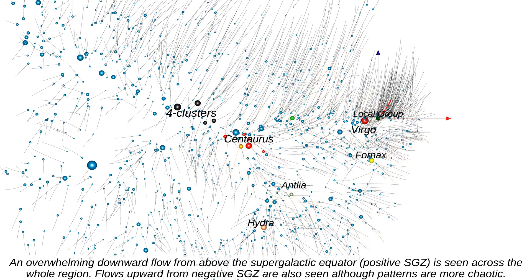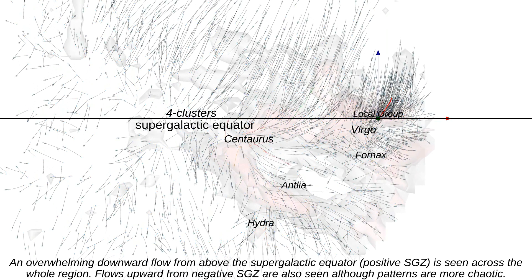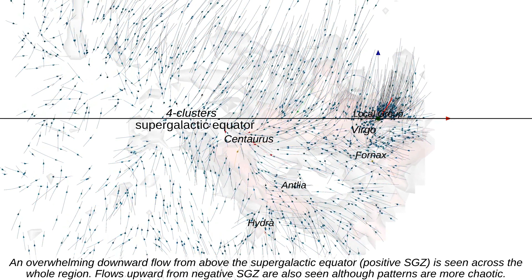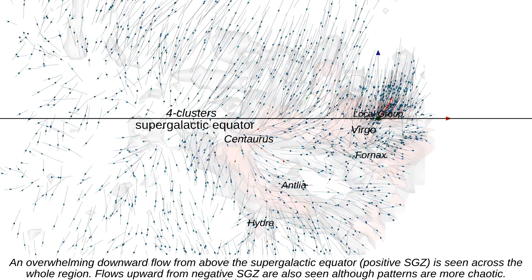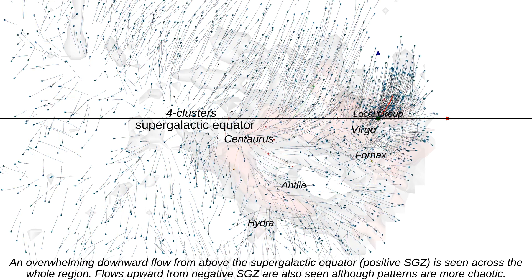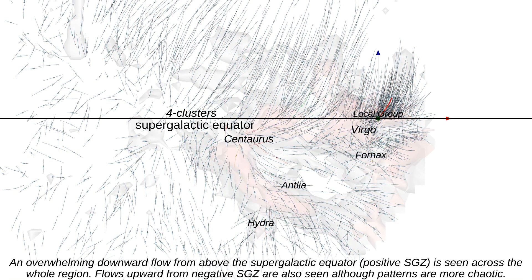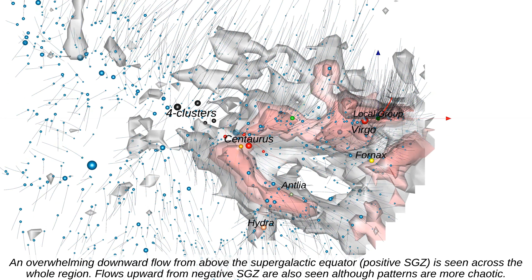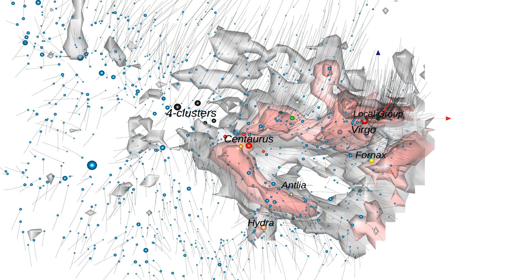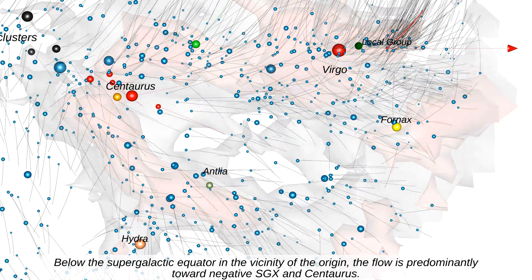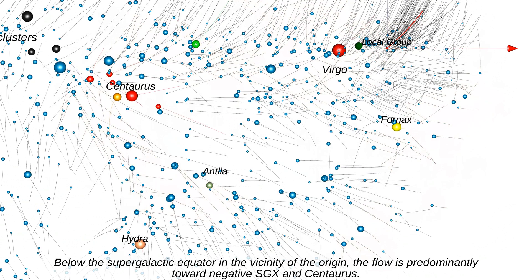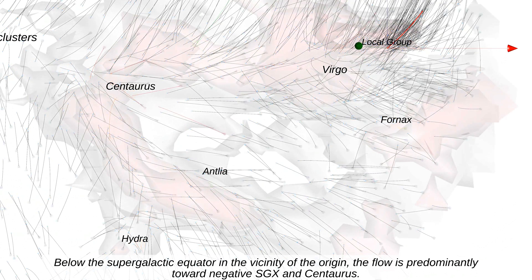An overwhelming downward flow from above the supergalactic equator — positive SGZ — is seen across the whole region. Flows upward from negative SGZ are also seen, although patterns are more chaotic. Below the supergalactic equator, in the vicinity of the origin, the flow is predominantly toward negative SGX and Centaurus.